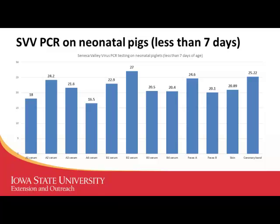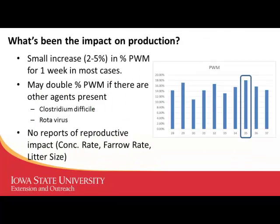What was the impact on production? In most cases — with a couple of exceptions — if there wasn't a co-infection with Clostridium, rotavirus, or another agent, it would be a temporary two to five percent increase in pre-weaning mortality for about a week. Clinical signs tended to last four to seven days, maybe out to ten, then things went right back to normal. Looking at records retrospectively, there was no real impact on conception rate, farrowing rate, or litter size — just a pre-weaning mortality impact that was pretty short.